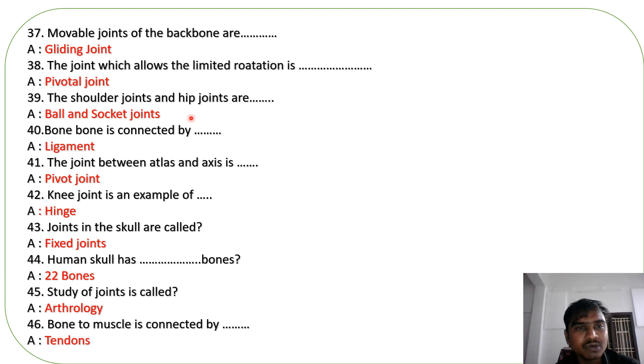The shoulder joints and hip joints are ball and socket joints. Bone to bone is connected by ligaments. The joint between atlas and axis is pivot joint.